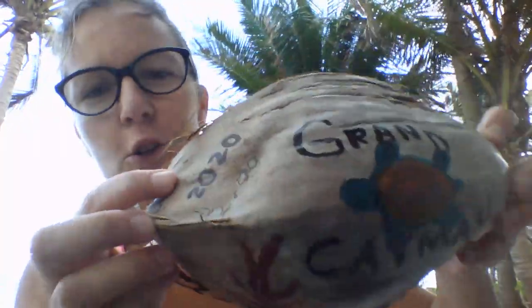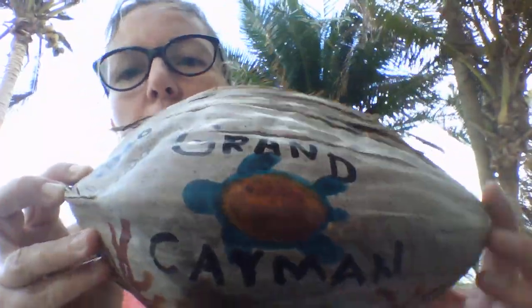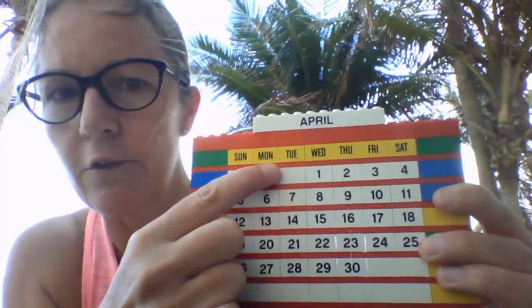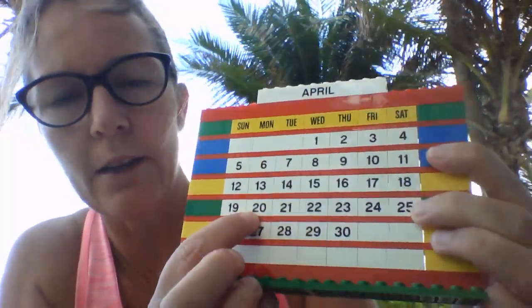What year are we in? Can everybody remember? I've got a new little thing to show you — another coconut — 2020! And we're in Grand Cayman. So we know the day, month, number, year, so we can say the full date. Today is Monday — remember that's an abbreviation for Monday, the shortened version — Monday, April 20th, 2020.